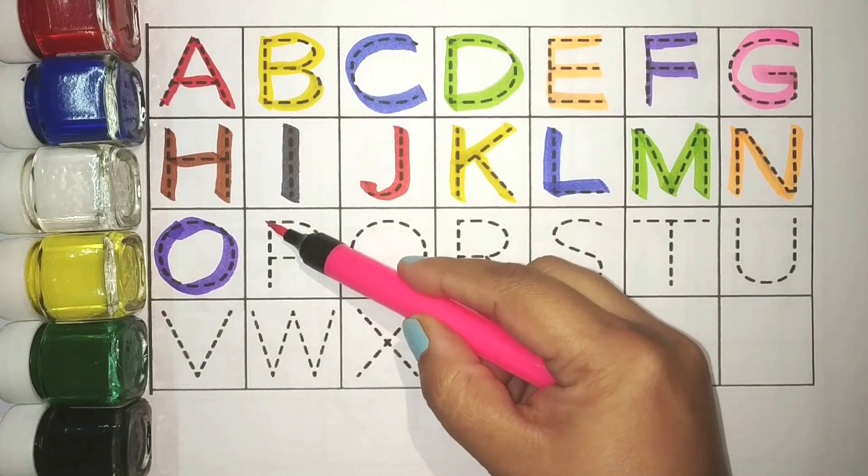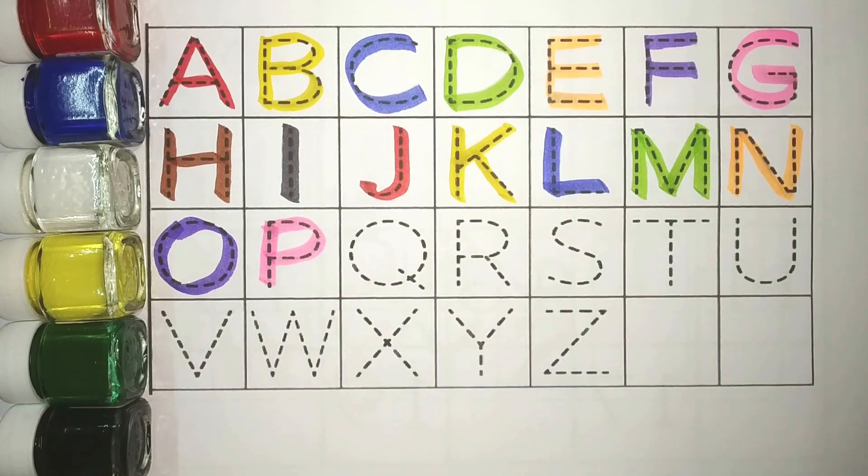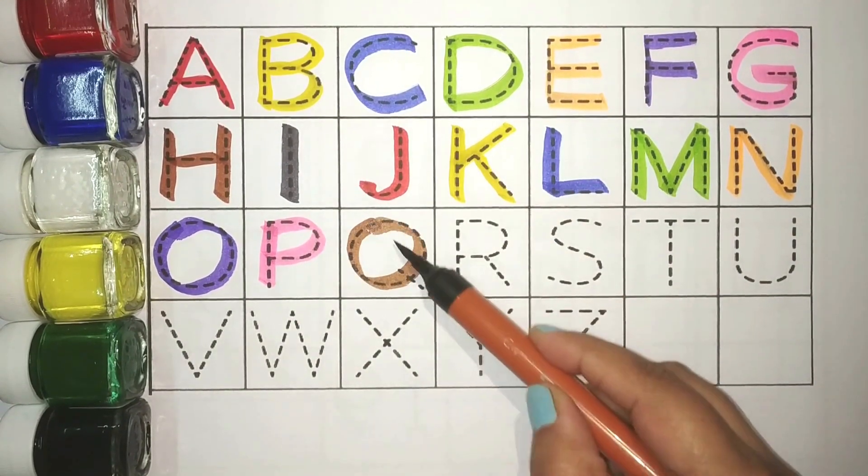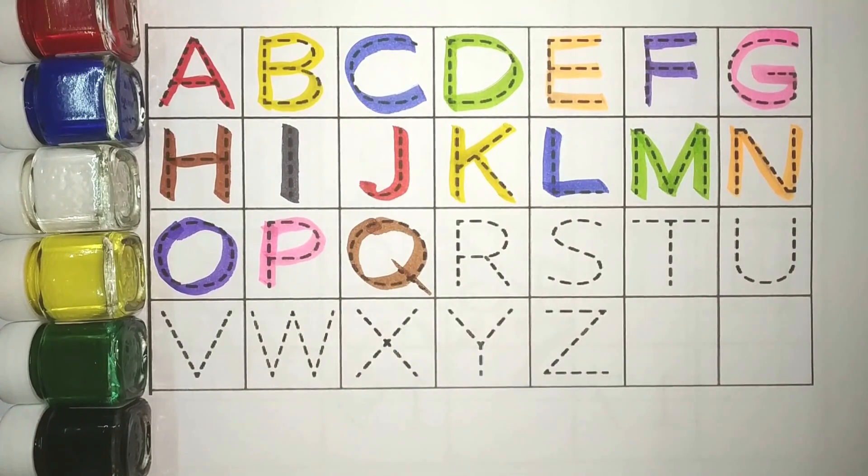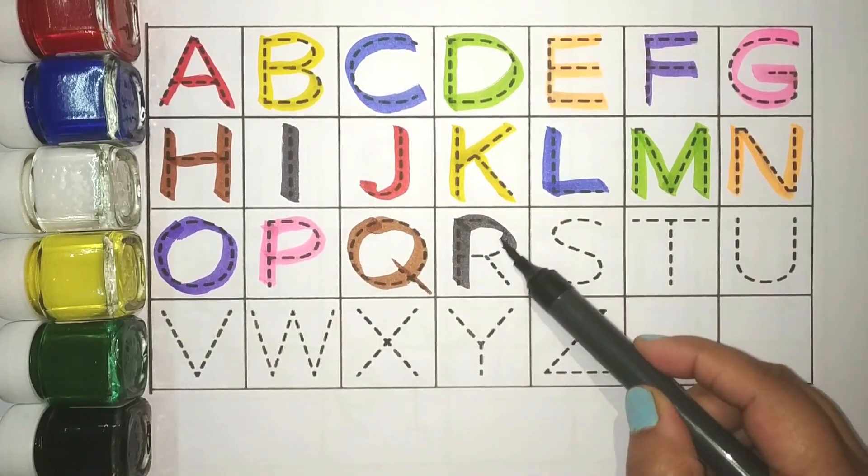Pink, P. P for pencil. Brown, Q. Q for queen. Gray, R. R for rabbit.